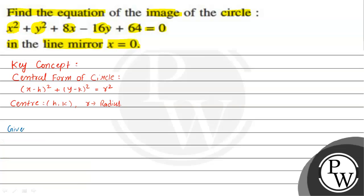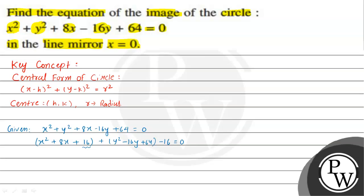The given equation of the circle is x² + y² + 8x - 16y + 64 = 0. We will rewrite this as x² + 8x + 16 + y² - 16y + 64, adding and subtracting 16 to complete the square, equal to 0.